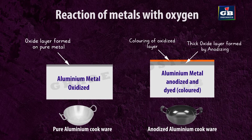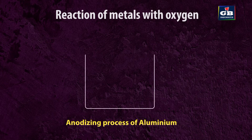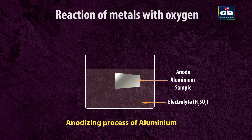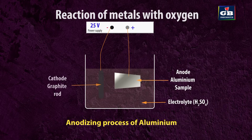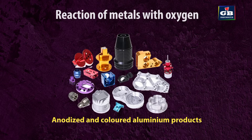We can make this protective layer even thicker to improve its resistance to corrosion. Anodizing is a process to make a thicker protective layer on metals like aluminium. A clean piece of aluminium is placed in a solution of dilute sulfuric acid and connected to an electrical circuit as the anode (positive electrode). When electricity flows through the solution, oxygen gas is produced at the surface of the aluminium, reacting with it to form a thicker oxide layer. This thicker oxide layer can be dyed in various colors to give the aluminium an attractive finish.